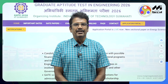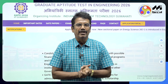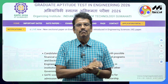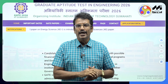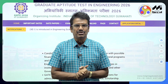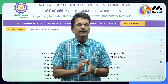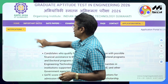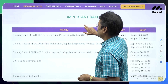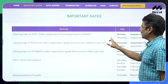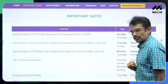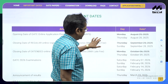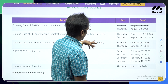Good morning students and GATE aspirants. As you're all aware, the GATE 2026 notification came about 25 days ago, and the online registration has just started yesterday, that is on 28th August. Earlier, the online registration was supposed to be on August 25th, but that was modified to August 28th.